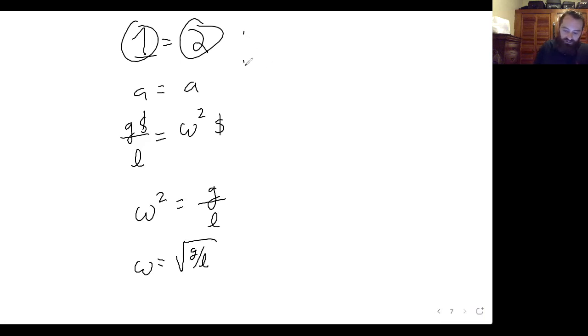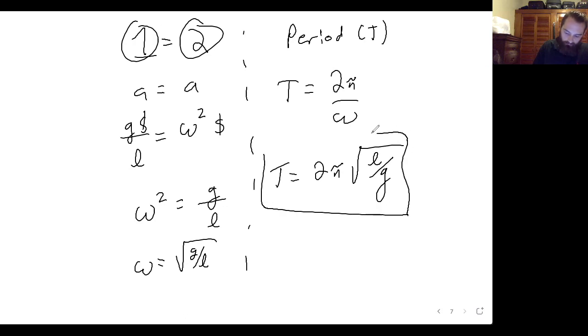And then for period, we remember from rotational motion that period equals 2 pi over omega. So period equals 2 pi square root L over G. So using just Newton's laws, we're able to derive the period of a pendulum.